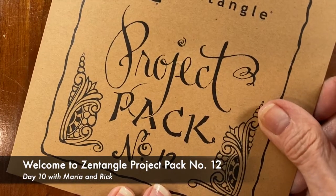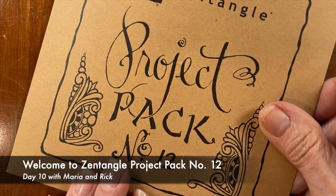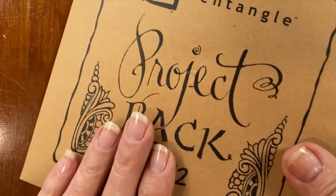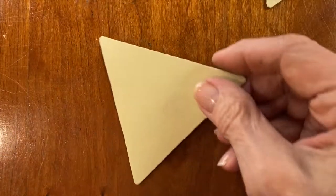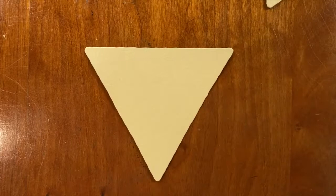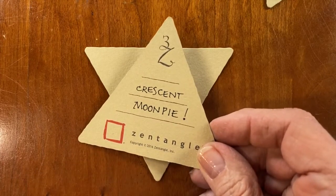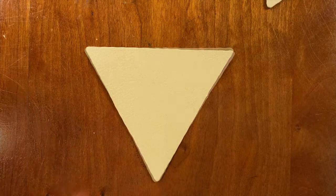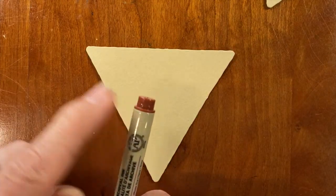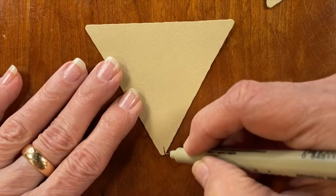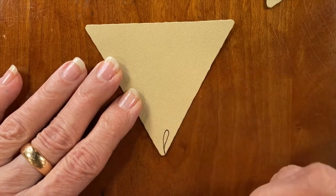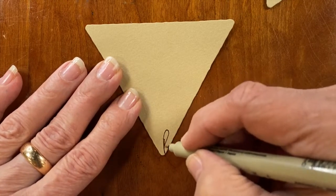Welcome to Project Pack number 12, Day 10. My name is Rick. Hi, I'm Maria again. We're back. We're going to do another crescent moon pie just to show you how a tangle can look so different from one tile to the other.